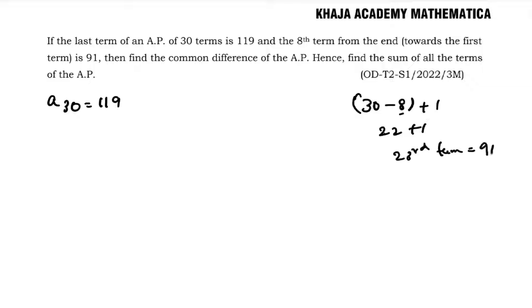Now how to find it? There are 30 terms. From the end, the last 8th term—so you subtract 8, then add 1. For example, if you want, you can count: 30, 29, 28...